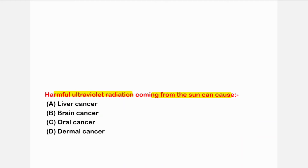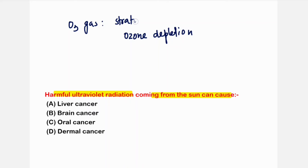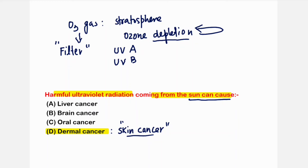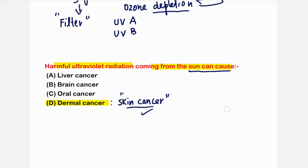The next question: harmful ultraviolet radiation coming from the sun can cause what? The ozone layer in the stratosphere normally filters UV-A and UV-B radiations. However, due to pollution and ozone layer depletion, harmful ultraviolet rays directly reach the earth, which is one of the potent causes of skin — dermal — cancer. So dermal cancer is the correct answer.